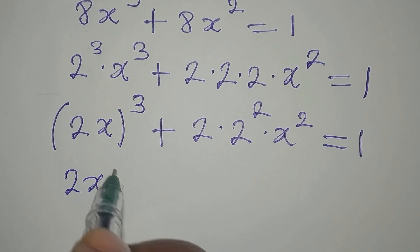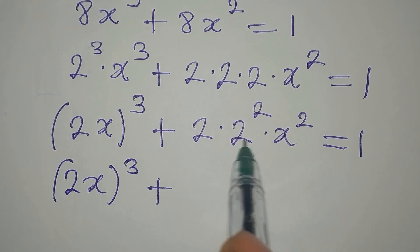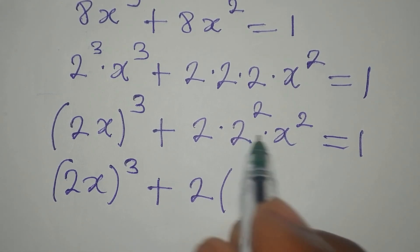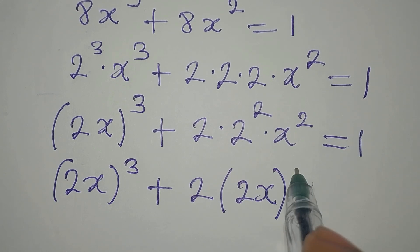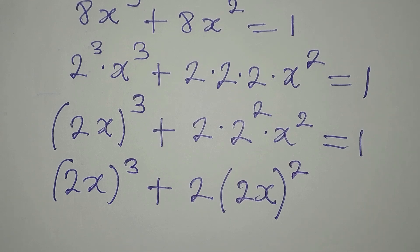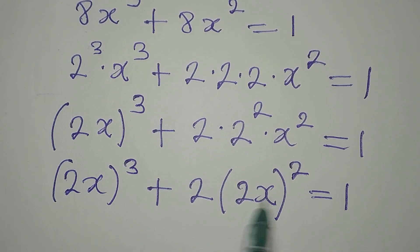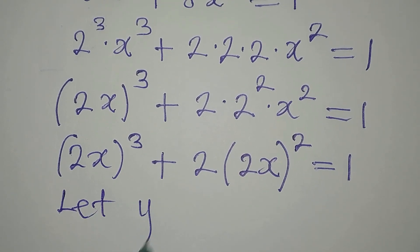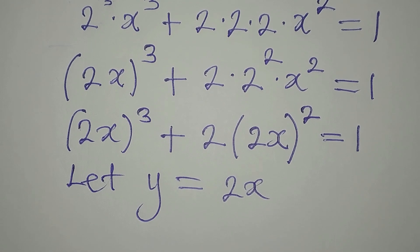Now, 2x to the power of 3 is here. Plus, we can combine these two — pick this out. Then 2x, both of them, will be raised to the power of 2. So this is now equal to 1. This is what I've been trying to get, so that we have 2x here and 2x there. Now let y be equal to 2x, meaning that anywhere we find 2x, we write y.